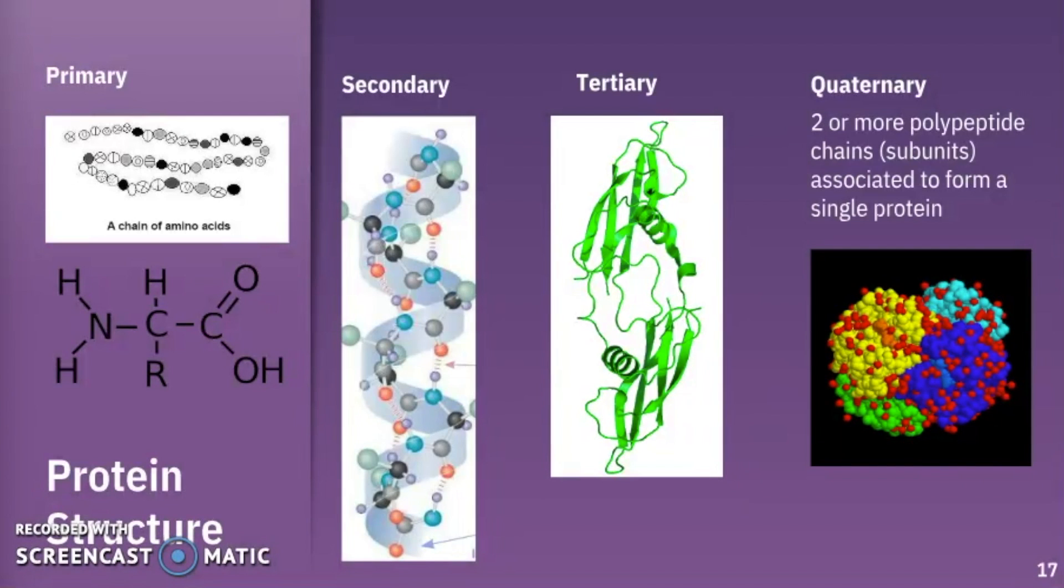When we get to our quaternary protein structure, this is when we have two or more polypeptide chains or subunits associated to form a single protein. So this is a common example which is hemoglobin. So we have several subunits. We have four subunits formed to create that single protein structure.